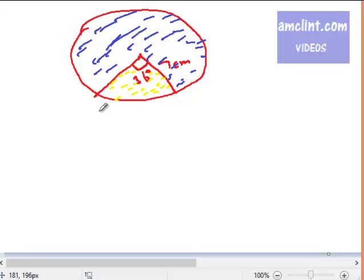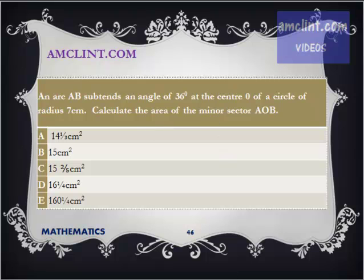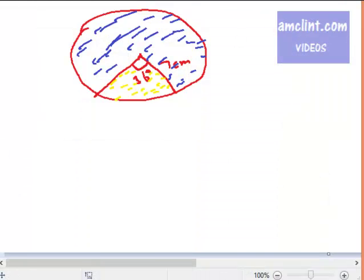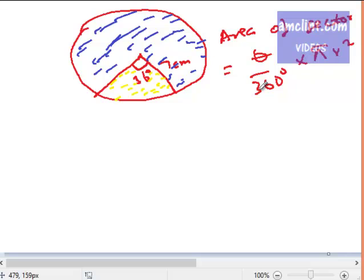Now, we have to calculate the area of the minor sector. Recall that the area of a sector equals theta over 360 degrees times pi r squared. And theta here could be this or the remaining angle.